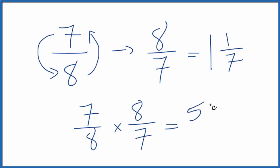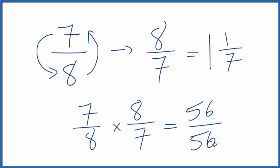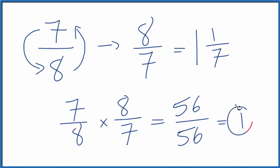7 times 8, that's 56. 8 times 7 is 56. 56 divided by 56, that's 1. So we did the first part correctly. The reciprocal for 7 eighths is 8 sevenths.